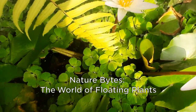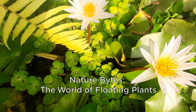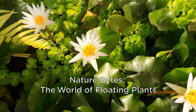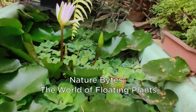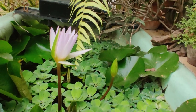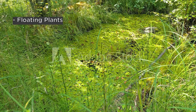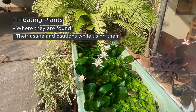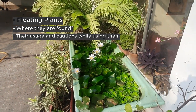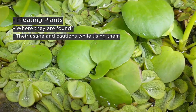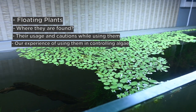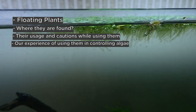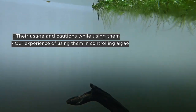Floating plants have become quite common in the planted aquarium hobby. In this episode of Nature Bites, where we discuss different varieties of plants and animals, we're going to speak about floating plants — where they are found, where all you can use them, and the cautions you need to exercise while using them. We will cover our experience of using floating plants for controlling algae, which I'm sure you will be excited to see.